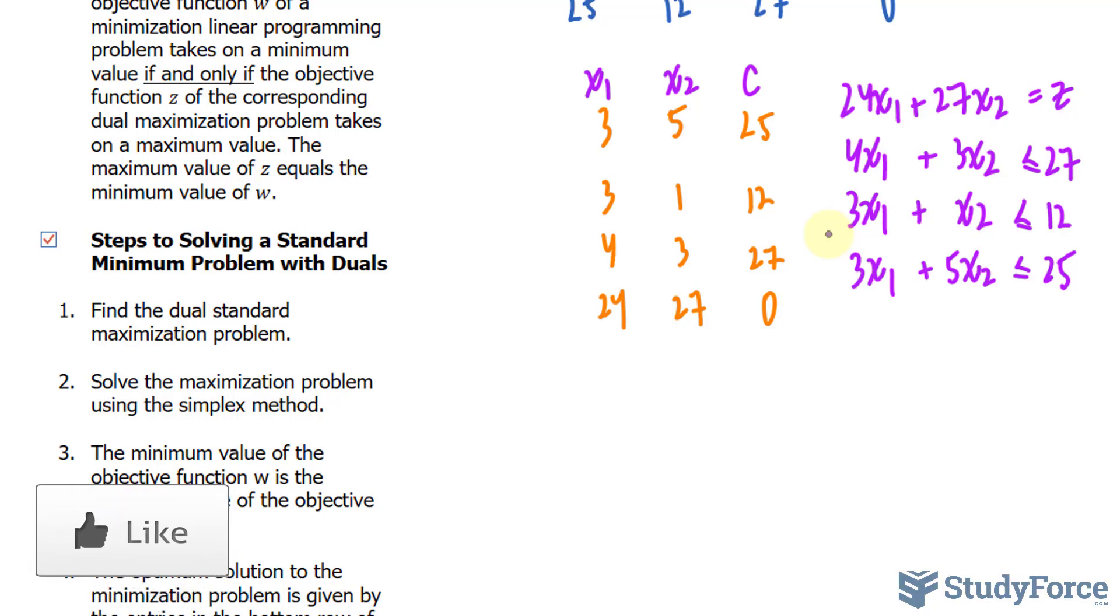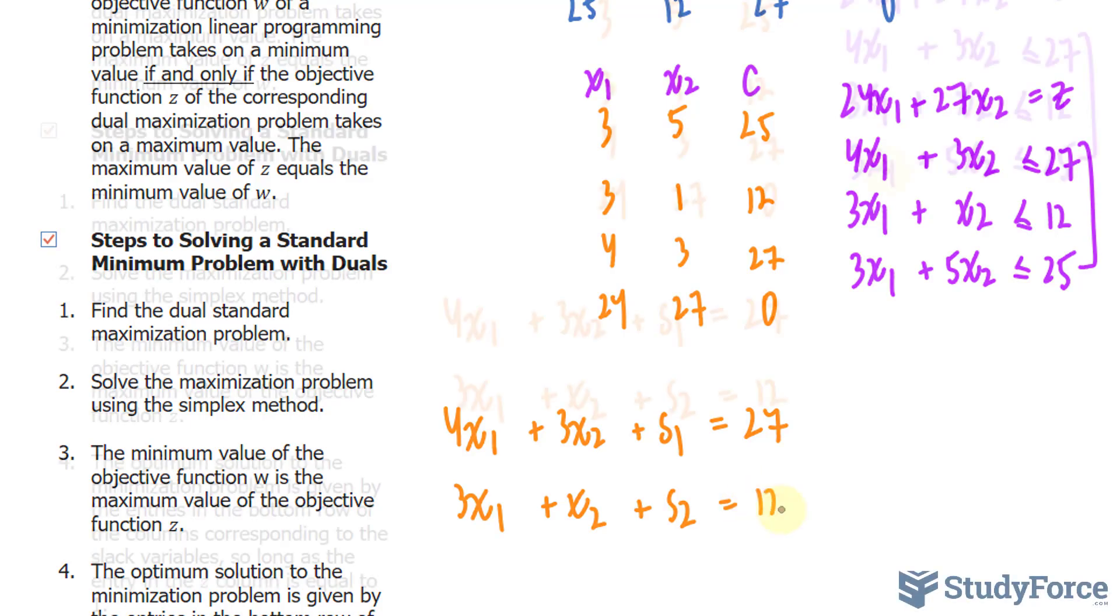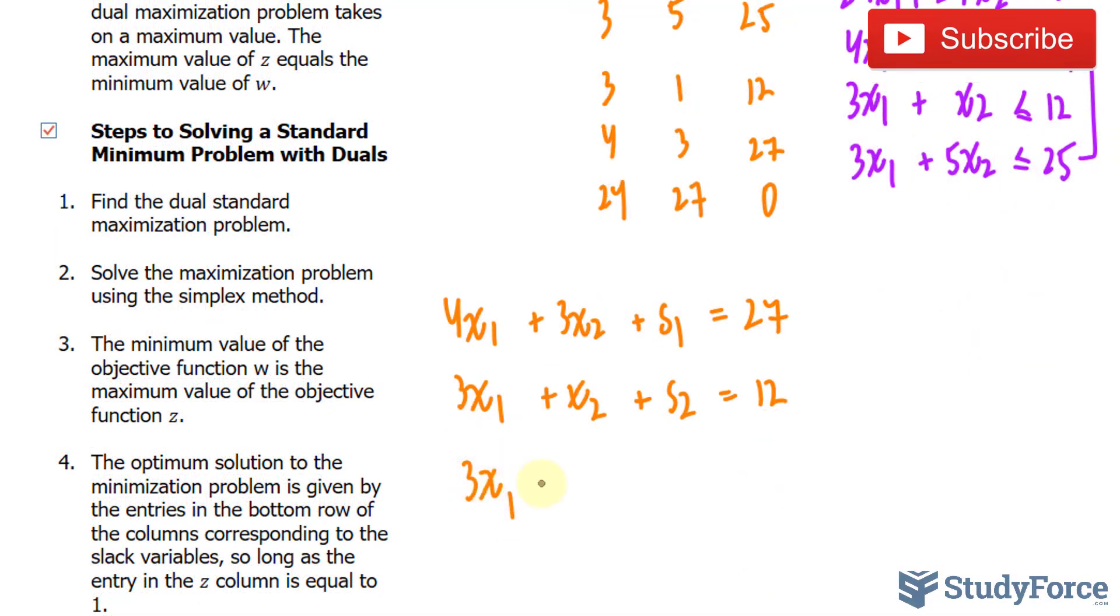So with that being said, I'll need to convert these three inequalities into equations, and that can be done by introducing slack variables. So we'll introduce a slack variable for each one of these. For the first one, I'll write down 4x₁ plus 3x₂ plus my first slack variable, and that's equal to 27. For this one, 3x₁ plus x₂ plus my second slack variable is equal to 12. For this one, we have 3x₁ plus 5x₂, my third slack variable is equal to 25. Notice that by introducing these, my inequalities have become equations.